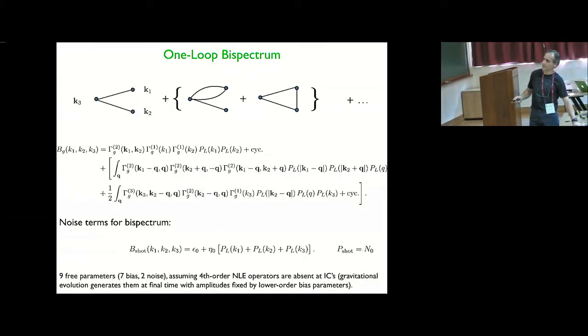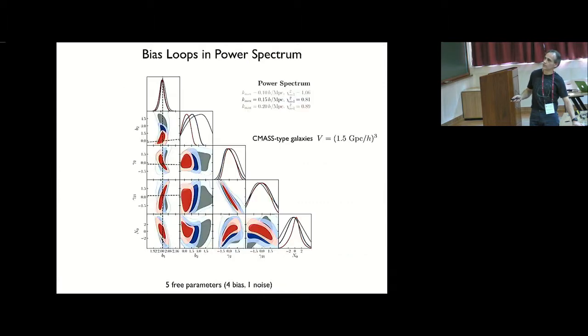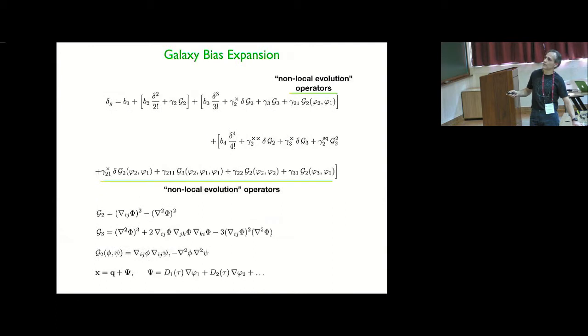And I simplify the expressions to actually, because the fourth order parameters that appear here, these fourth order parameters are poorly constrained. So what I did was to reduce the parameter space. I assumed that these guys are zero in the very far past, and then evolve them by nonlinear evolution. They get generated with an amplitude that depends on the other parameters.